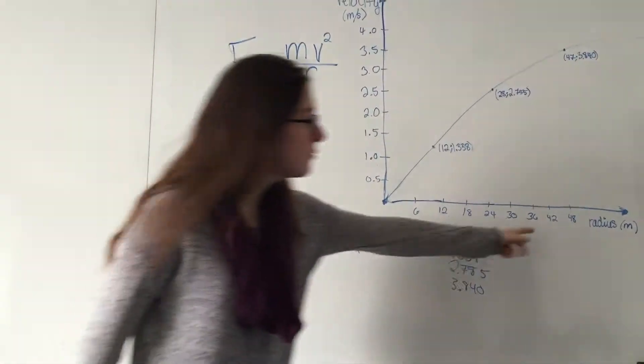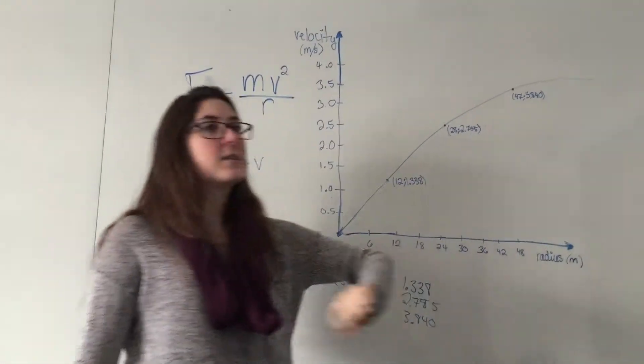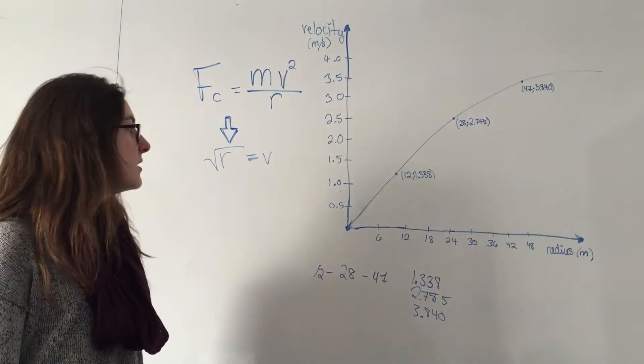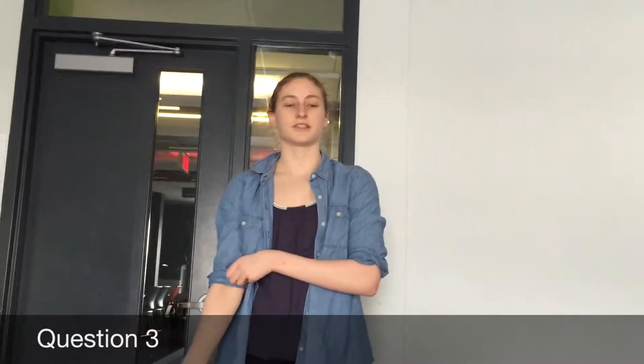The graph shows the square root relationship when radius is not squared. How does velocity affect Fc? The relationship between centripetal force and velocity is squared, because Fc is proportional to v squared.